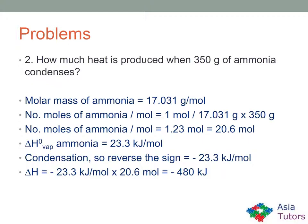Problem two: how much heat is produced when 350 grams of ammonia condenses? The molar mass of ammonia is 17.031 grams per mole. 350 grams gives us 20.6 moles. From the table, delta H vaporization of ammonia is 23.3 kilojoules per mole. For condensation we reverse the sign, giving minus 23.3 kilojoules per mole. Multiplied by 20.6 moles gives a final answer of minus 480 kilojoules.